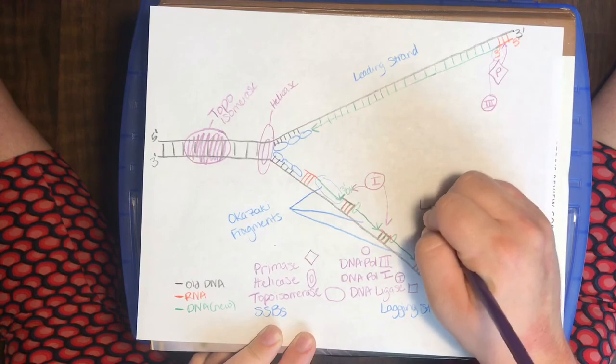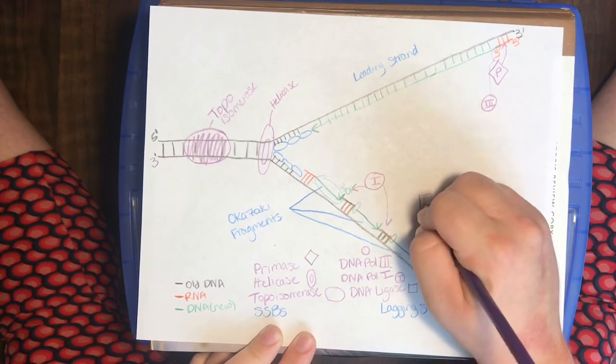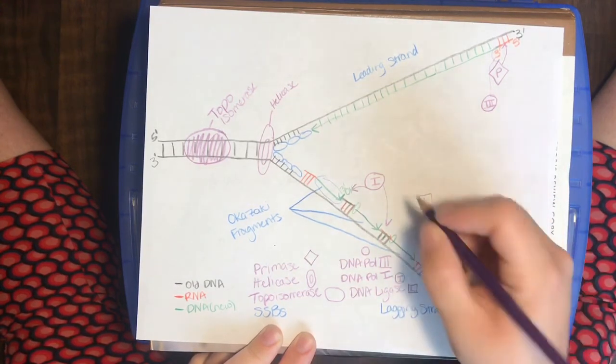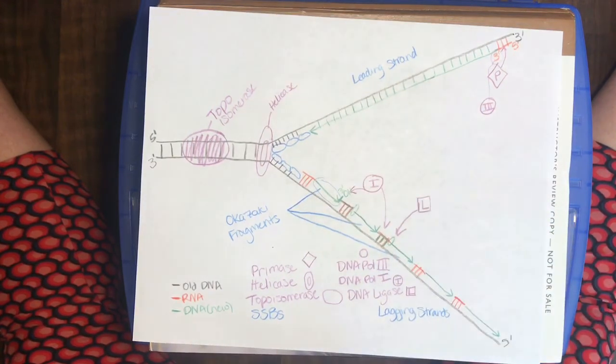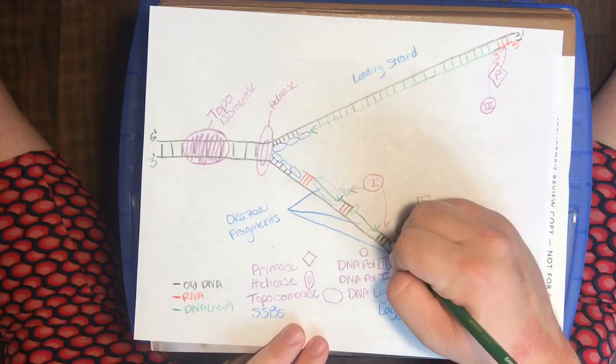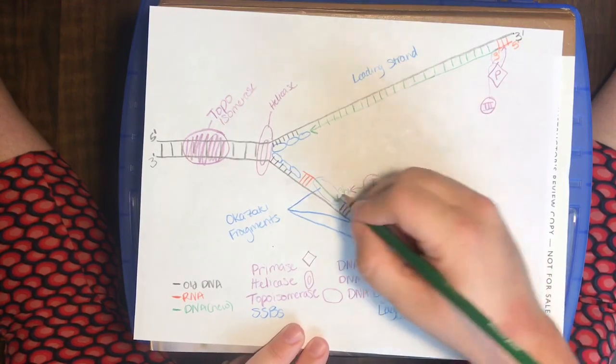So, DNA ligase, we're going to label it with an L, is going to come in here, swoop in here, find those nicks, and fill them in. And then, it basically serves to glue that phosphodiester bond back together, joining the 5' and 3' ends of these fragments.